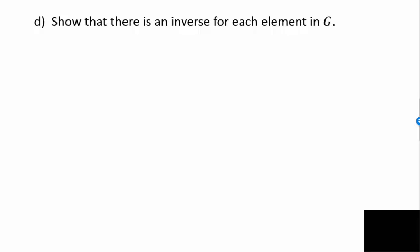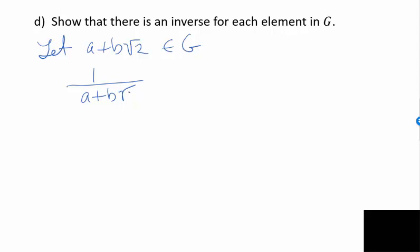We need to find inverses for each element in G. We know that G is a subset of the real numbers, and the multiplicative inverse of a number is just its reciprocal. So if a + b√2 is an arbitrary element in G, we know that 1/(a + b√2) is its multiplicative inverse. The question is: is it in G? That's what we need to show.